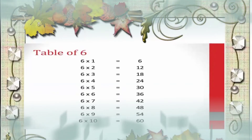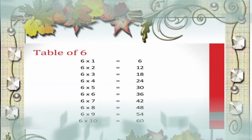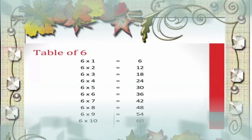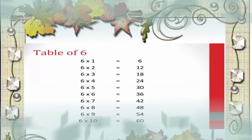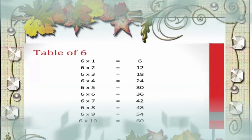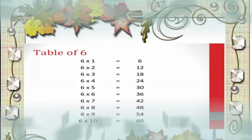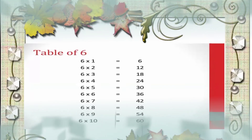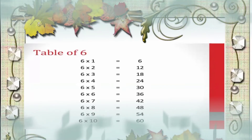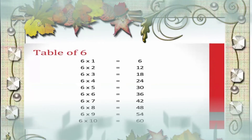Now the table of 6. 6 1's are 6, 6 2's are 12, 6 3's are 18, 6 4's are 24, 6 5's are 30, 6 6's are 36, 6 7's are 42, 6 8's are 48, 6 9's are 54, 6 10's are 60.